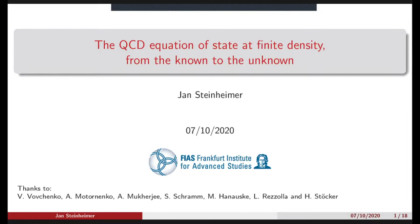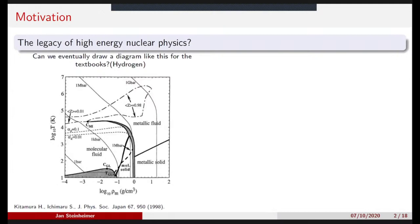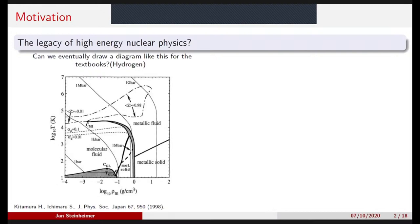I'm going to go through what we know and what we don't know about the QCD equation of state at finite density, and how we want to find out about it. I'll start modestly with what is actually the goal or legacy of high-energy nuclear physics or heavy-ion physics. What I show here is the phase diagram of hydrogen — something people actually know — as a good example of what we also want for the QCD or strong interaction.